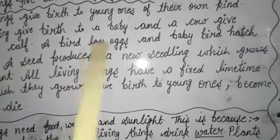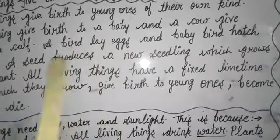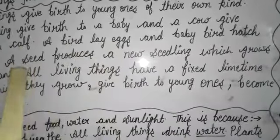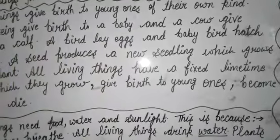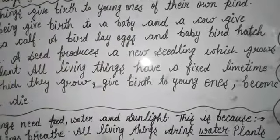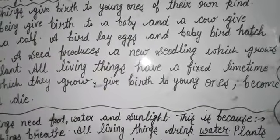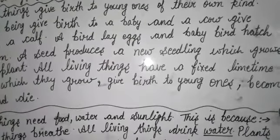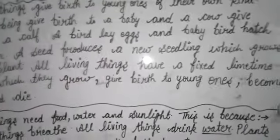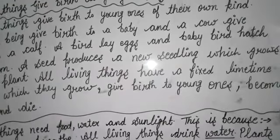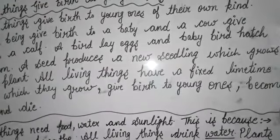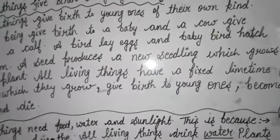A seed produces a new seedling — जो seed बीज होता है, उसमें से भी वैसा ही plant grow होता है जैसा वो mother plant है. जैसे mango का plant होता है, उसकी seed से नया mango का ही plant grow होगा.